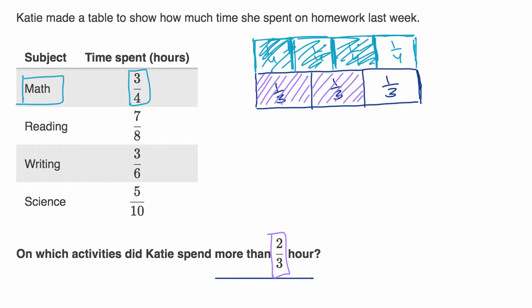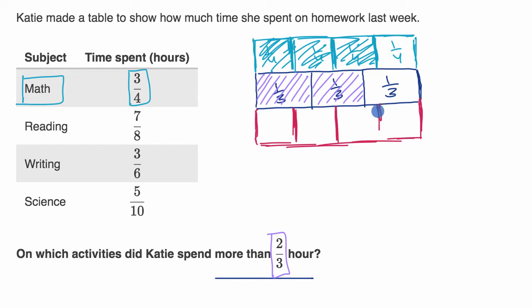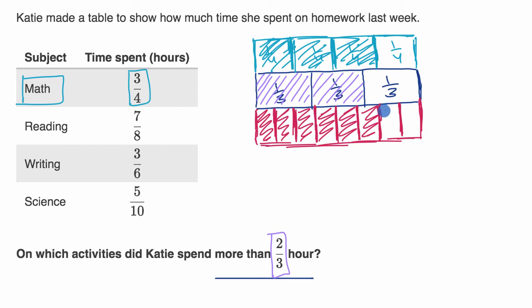I'll put a circle around the ones where she spent more than two-thirds of an hour. Now for reading — seven-eighths. I'll make a whole and split into eight equal sections by dividing into two, then four, then eight equal sections. Each of these is an eighth, so seven-eighths would be one, two, three, four, five, six, and seven-eighths. Clearly, that's greater than our two-thirds. So she spent more than two-thirds of an hour on reading.